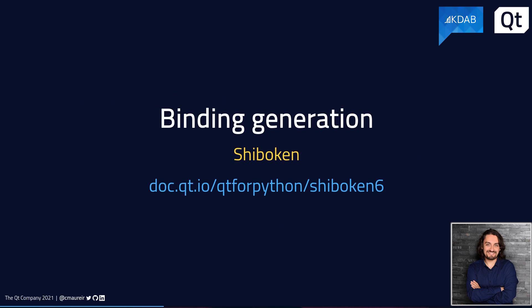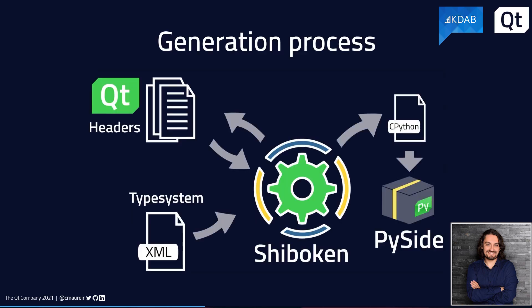Let's talk about binding generation. For Shiboken, you can find all the documentation at this URL. In a nutshell, the whole process to generate the PySide bindings goes as follows: Shiboken reads the Qt headers and gets all the information about all the Qt modules and classes. We complement that information with a type system, which is a group of XML files where you can describe many changes to the Qt API, mostly adaptations from C++ to Python. After that, Shiboken processes the information and generates C++ files that use the standard CPython API, which we can then compile to create the PySide module.